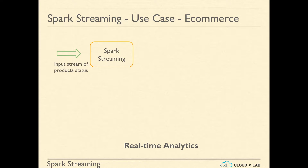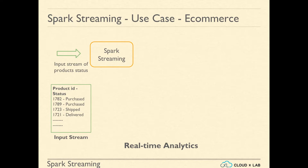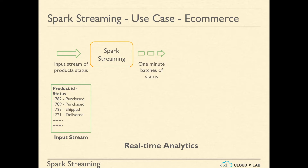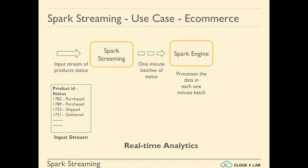As soon as a product status changes, the order management system pushes the product ID and product status to Kafka. Spark Streaming reads data from Kafka. Each row of the input stream contains a product ID and its current status. For example, the current status of order ID 1782 is purchased, and the current status of order ID 1723 is shipped. Spark Streaming creates one-minute batches from this input stream, and then the Spark Engine processes each one-minute batch and generates the stream of output for each batch.